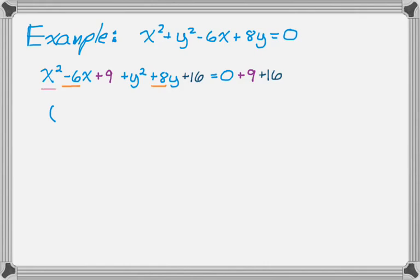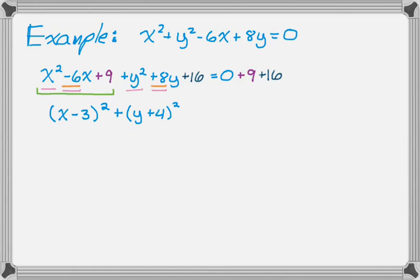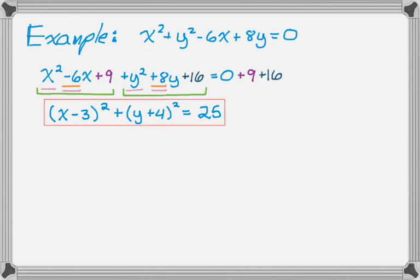The square root of x squared is x, and half of negative 6 is negative 3, so we get x minus 3 squared — that takes care of that trinomial. Then plus: the square root of y squared is y, and half of positive 8 is positive 4, so we get y plus 4 squared. On the other side we have 25. Later you might find out that this is actually the equation of a circle.